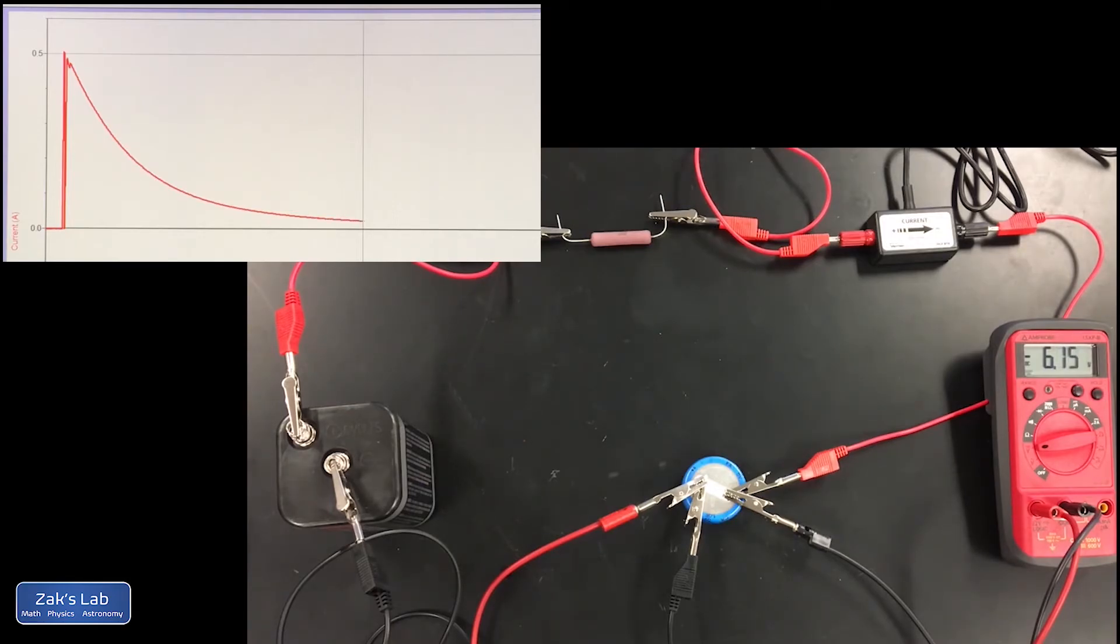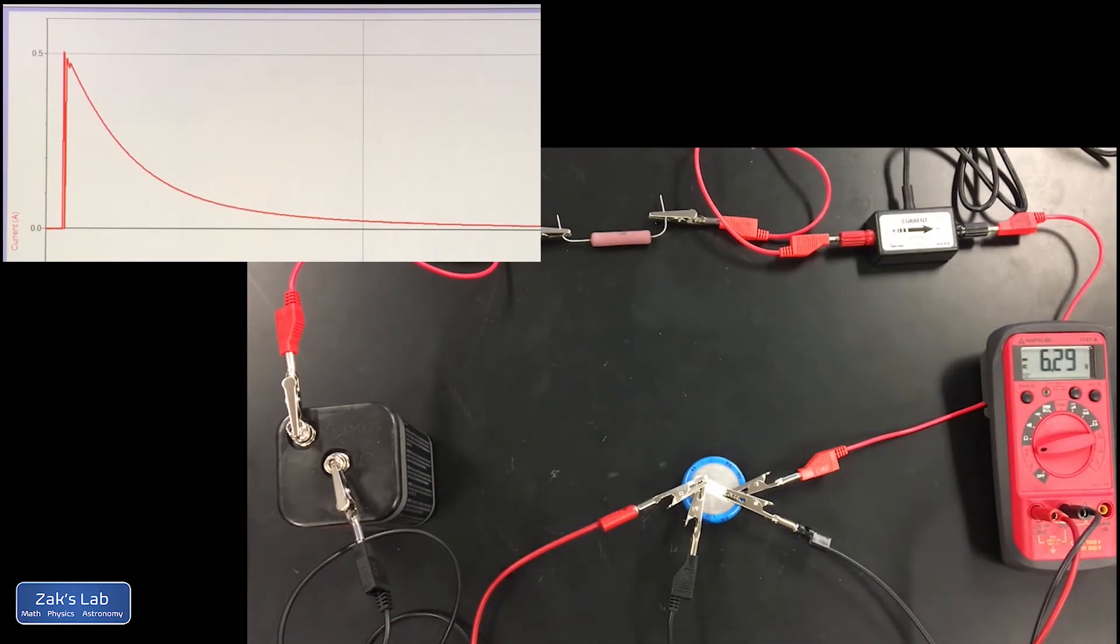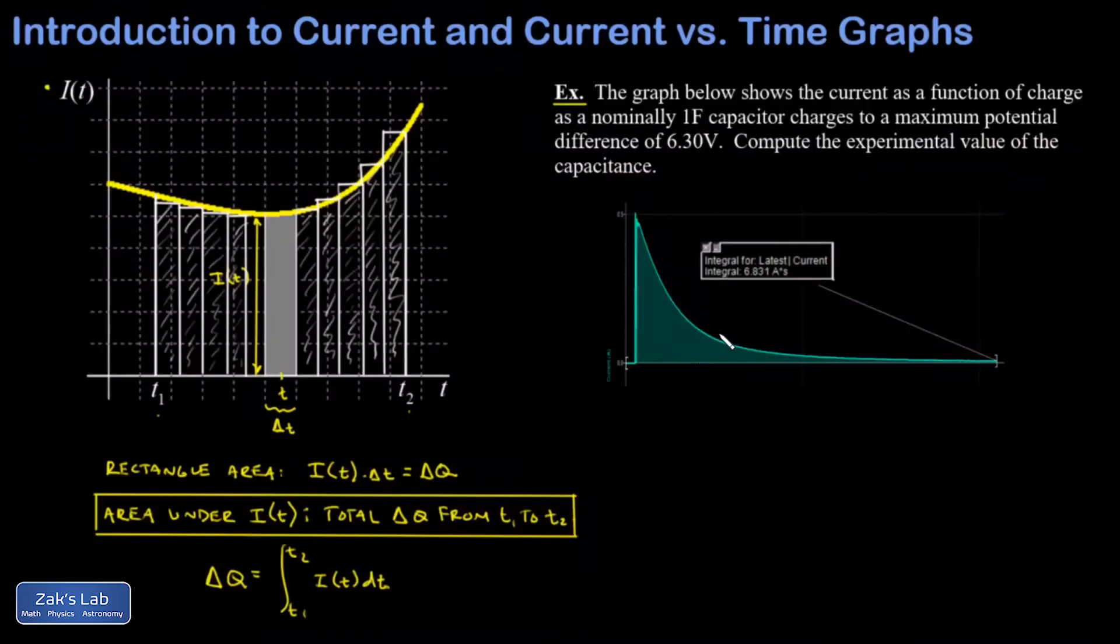So that current's really starting to flatten out now. That means the charge on the capacitor is approaching its maximum value. And that potential difference is getting real close to its maximum value now, which turns out to be 6.30 volts for this experiment.